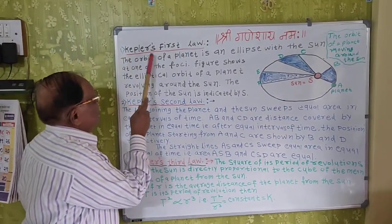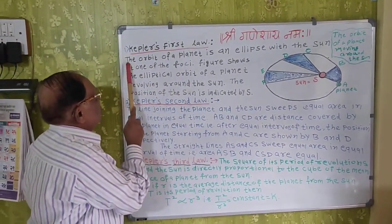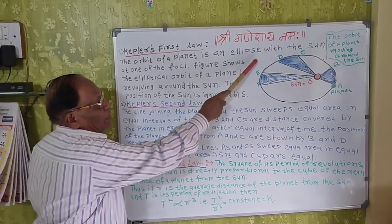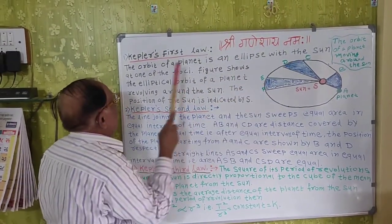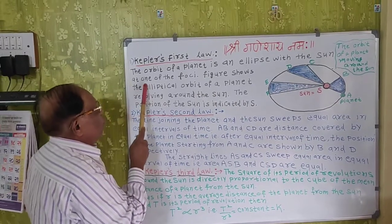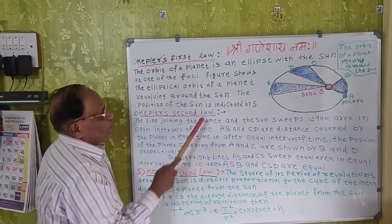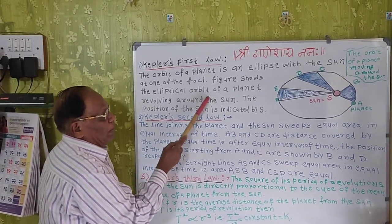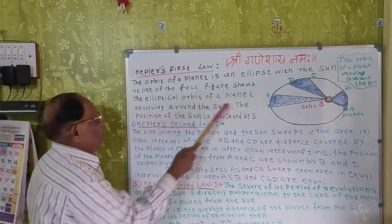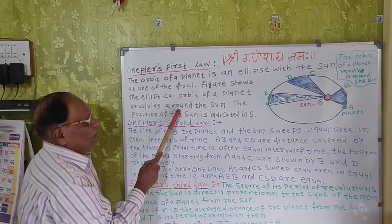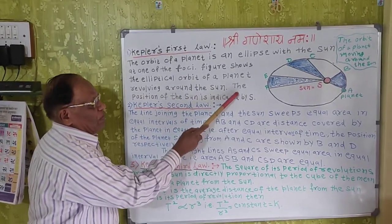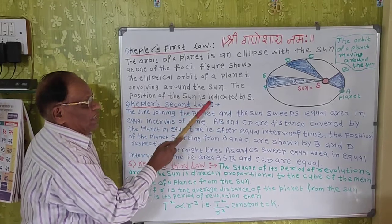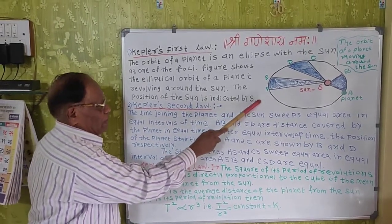Kepler's first law: The orbit of a planet is an ellipse with the sun at one of the foci. The figure shows the elliptical orbit of a planet revolving around the sun. The position of the sun is indicated by S.